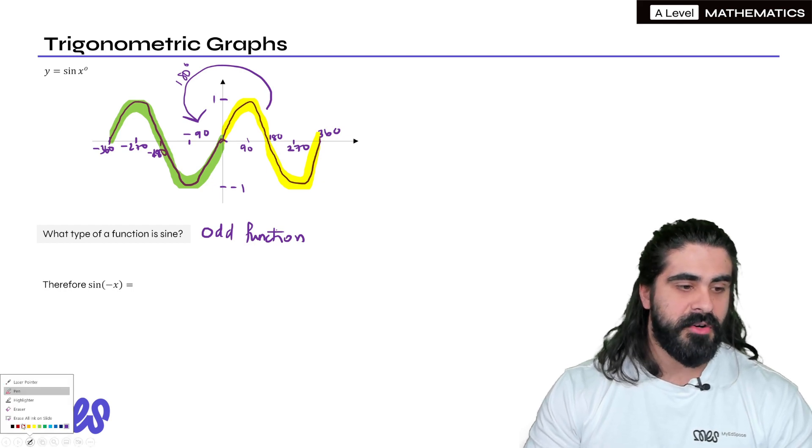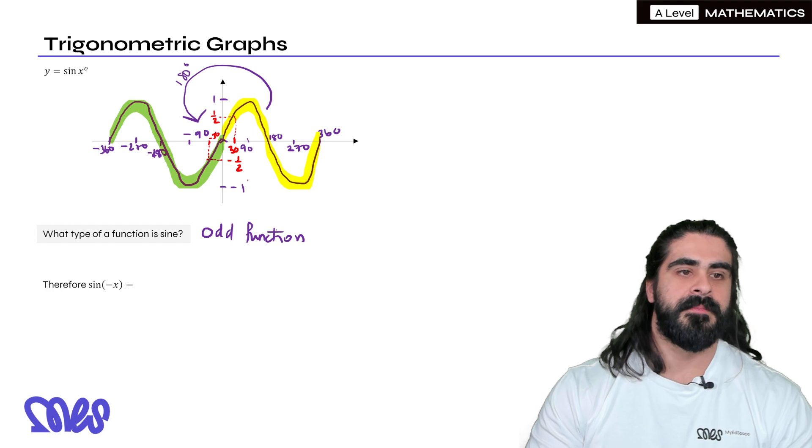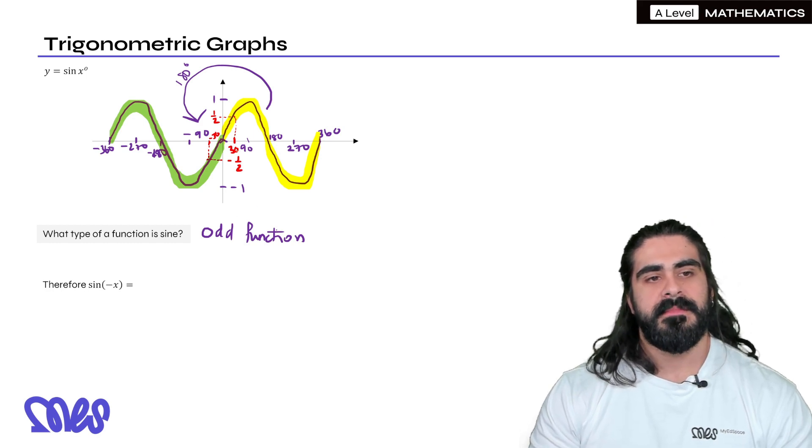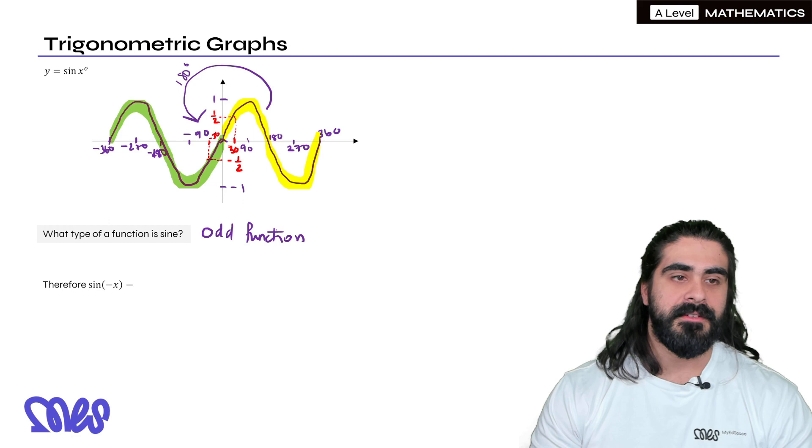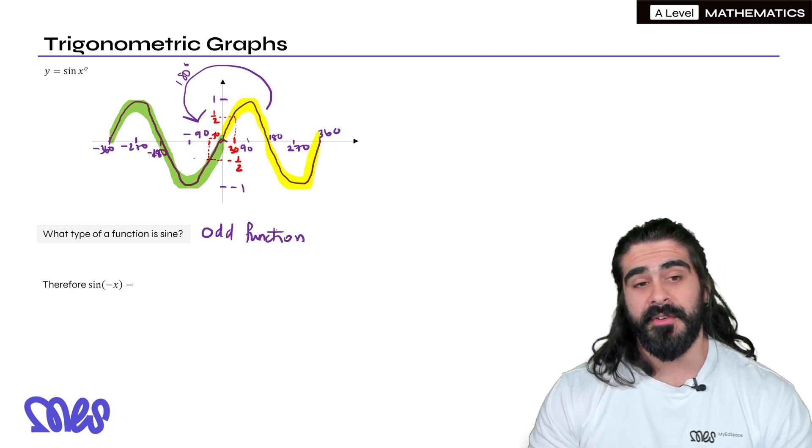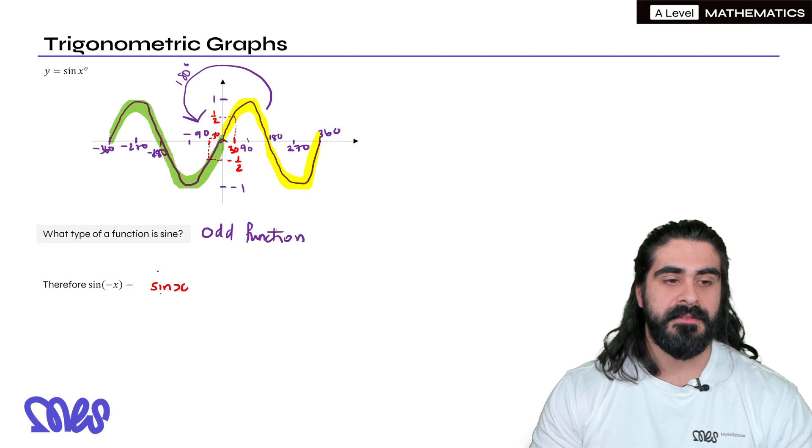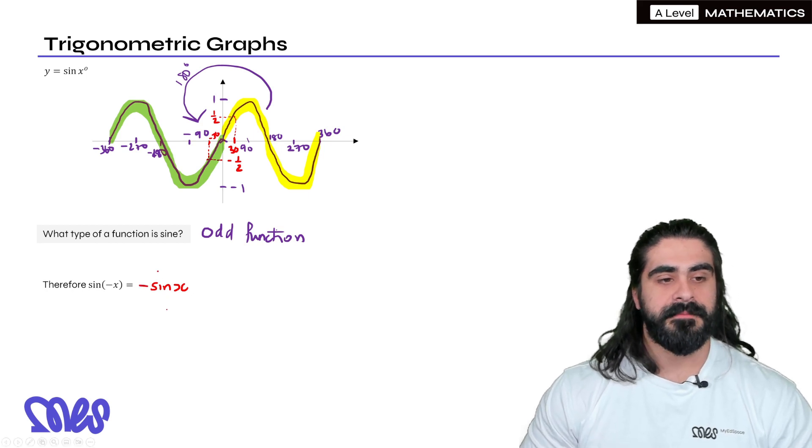Now what else does an odd function mean? If we look at sine of 30 degrees, this is an easy number. Sine of 30 degrees is a half. If you were to look at minus 30, sine of minus 30 is minus a half. So sine of 30 is the negative of sine of minus 30.